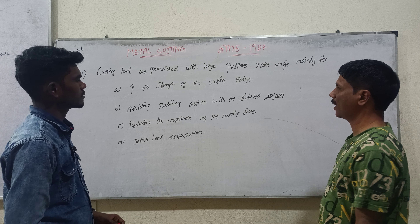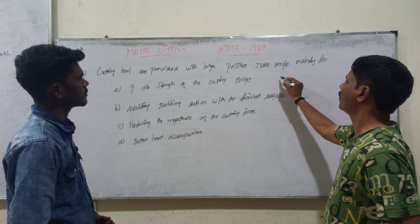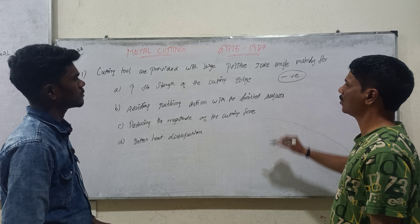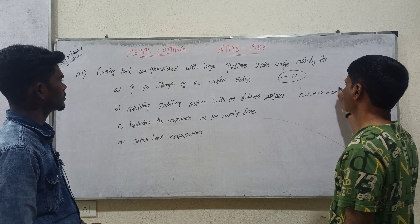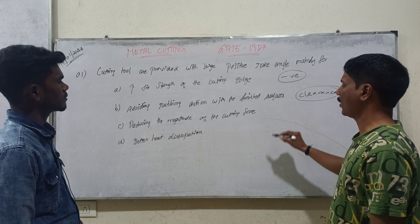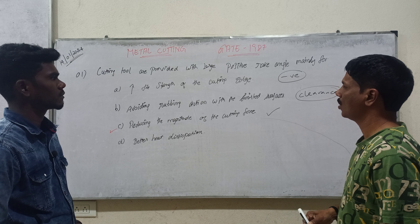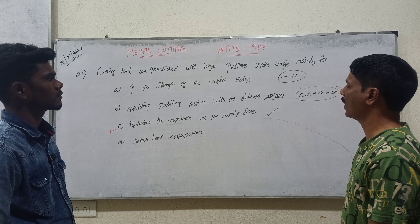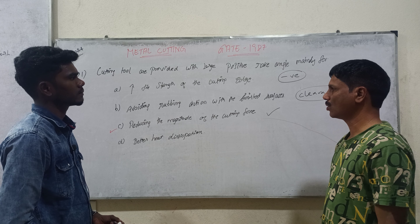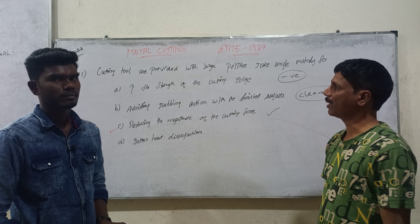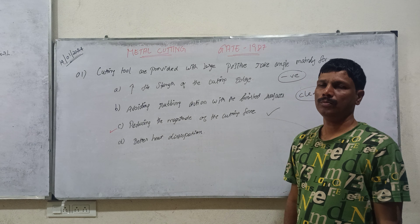So, for a large positive rake angle: increasing the strength of the cutting edge corresponds to the negative rake angle. Avoiding rubbing action corresponds to the clearance angle. Reducing the cutting force is the correct answer — a large positive rake angle is provided mainly to reduce the magnitude of the cutting force.